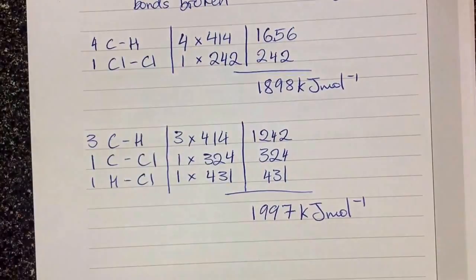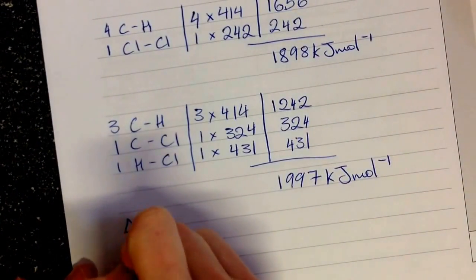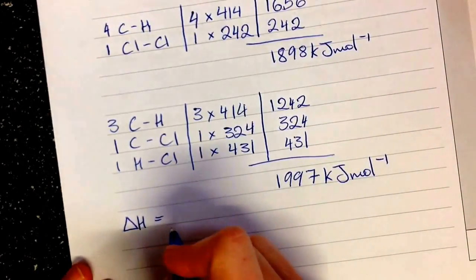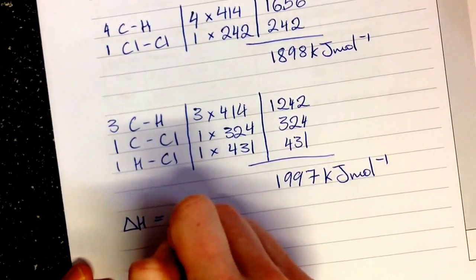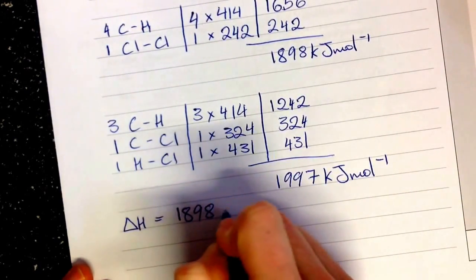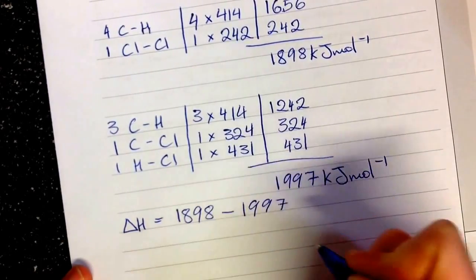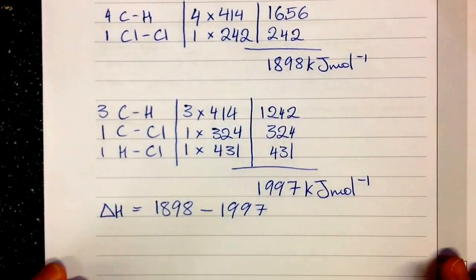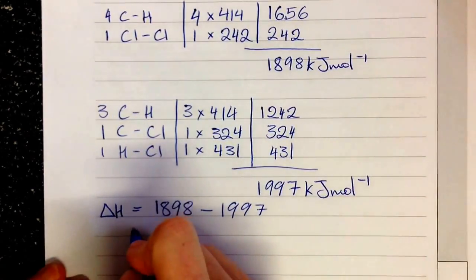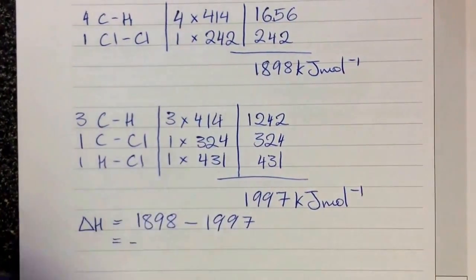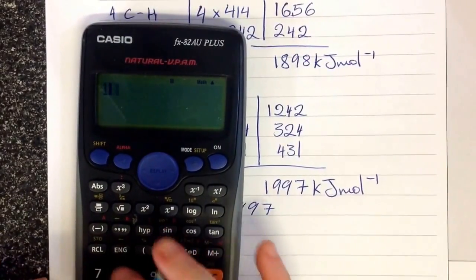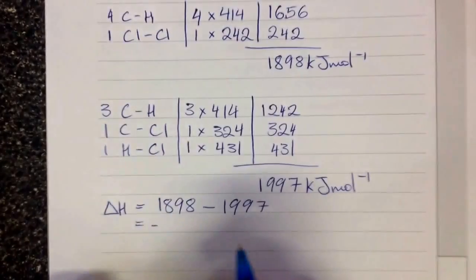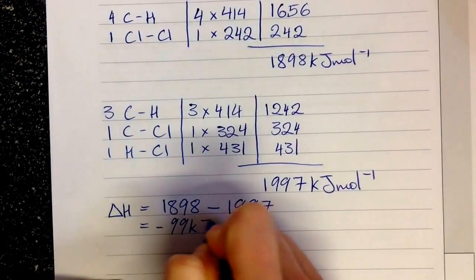Now delta H equals the bonds being broken minus the bonds being formed. So in this case 1,898 minus 1,997 and that is going to equal negative 99 kilojoules per mole.